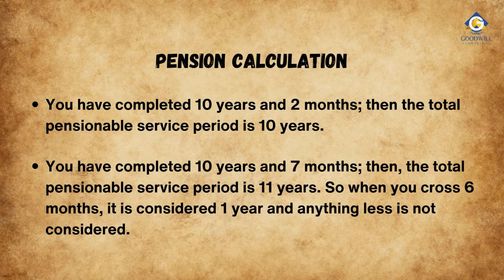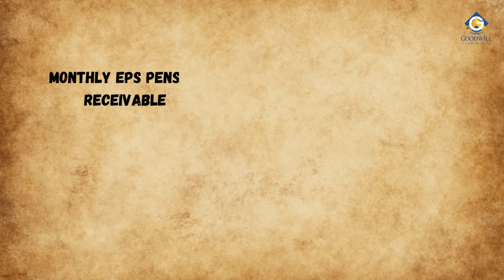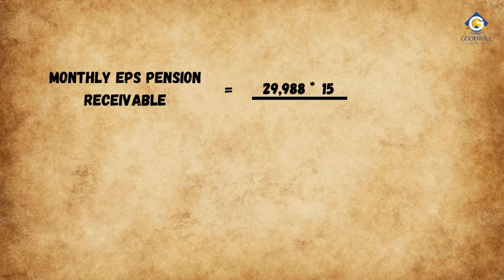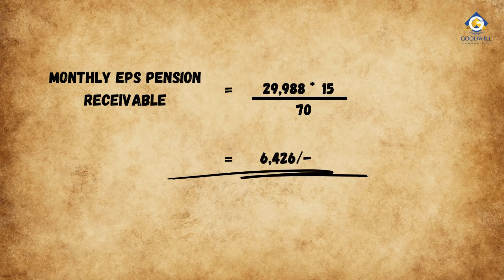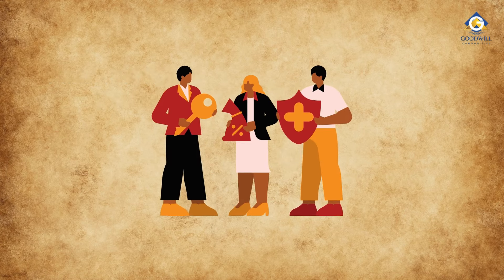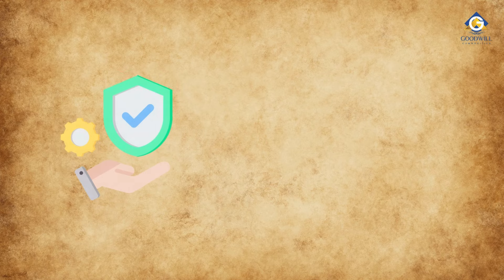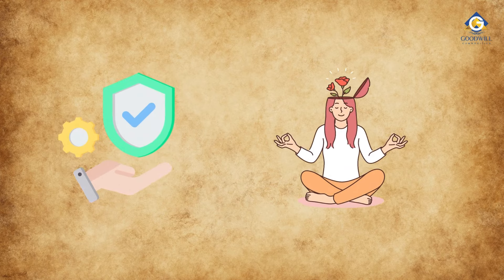So the monthly EPS pension receivable is calculated as follows: Rs. 29,988 (annual pensionable salary, as calculated in the previous scenario) multiplied by 15 (assumed pensionable service years), divided by 70, which gives you Rs. 6,426. That's a brief overview of the Employee Pension Scheme — a crucial aspect of employee benefits, providing financial security and peace of mind during retirement.